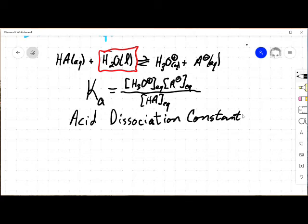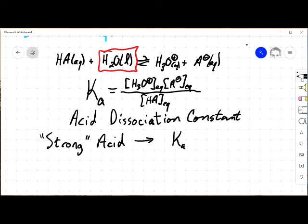So this gives us another way of interpreting the strength of acids and bases. Remember back in Gen Chem 1, we talked about strong acids, weak acids. But now, what do we mean by a strong acid? A strong acid is something that, back in Gen Chem 1, we said completely dissociates. If we think about that in terms of equilibrium, a strong acid, well, in equilibrium terms, a strong acid has Ka greater than 1.